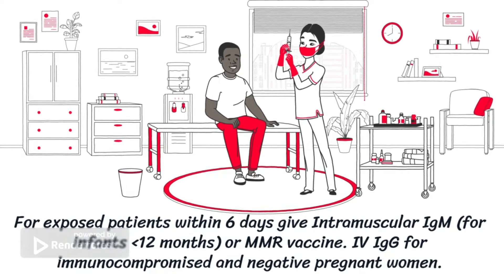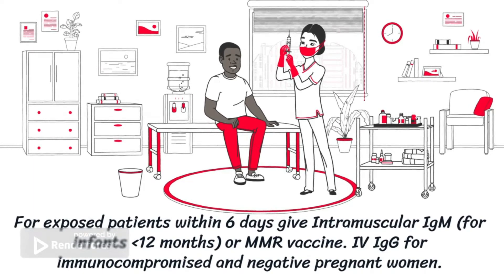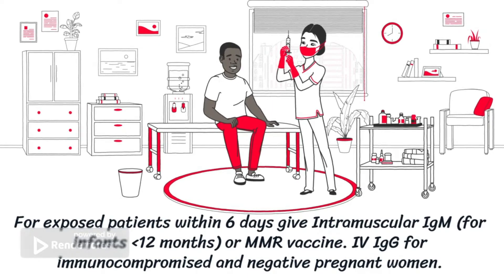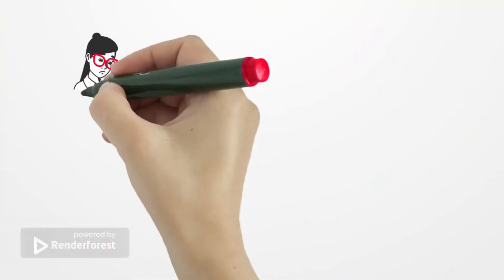In fact, those less than 12 months should receive intramuscular IgG. Alternatively, a measles, mumps, and rubella vaccine can be given if the child is six to 12 months and has been exposed within 72 hours. For the severely immunocompromised, we want to give intravenous IgG antibodies, and for unvaccinated pregnant women, we check their IgG status and give intravenous immunoglobulin if they are negative.